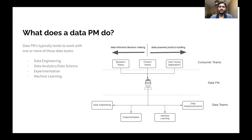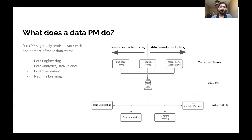Consumer teams use data products for making data-informed decisions — think of the dashboard example for performance marketing — or for data-powered product building, like a machine learning algorithm powering a recommendations or search engine. Depending on the kind and maturity of the organization, it could be one data PM or a full data PM org, with multiple data PMs catered toward specific data teams.